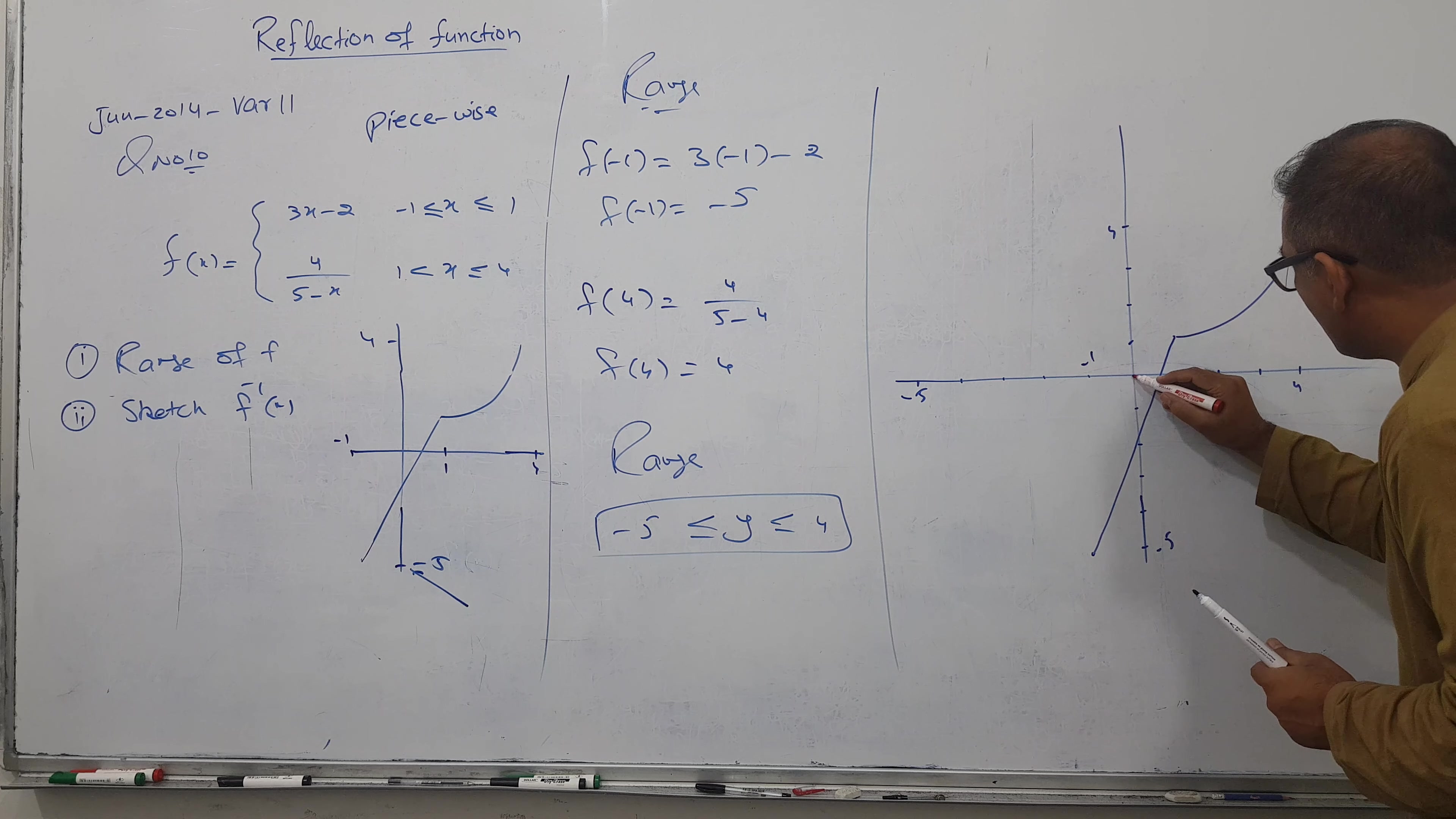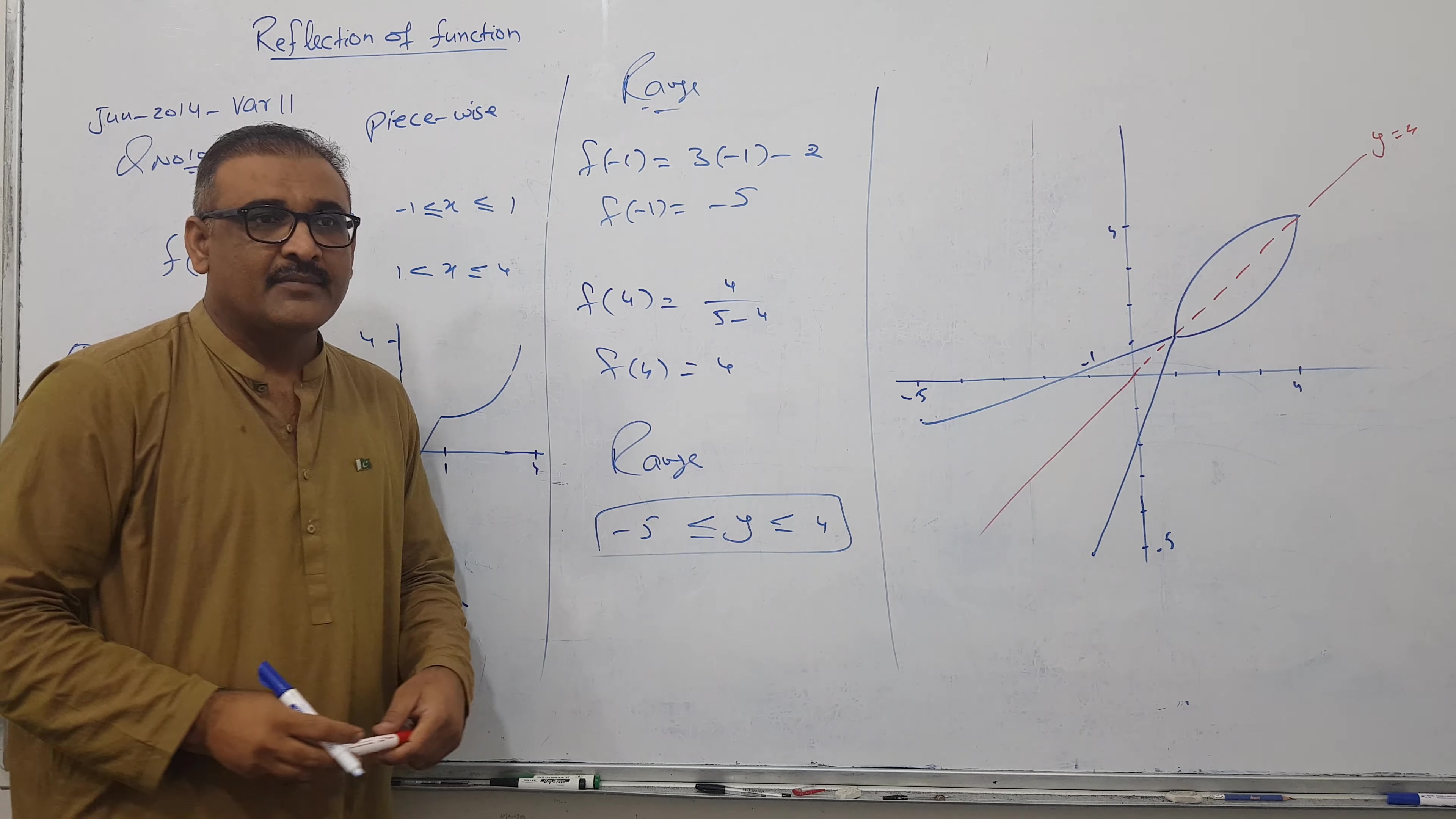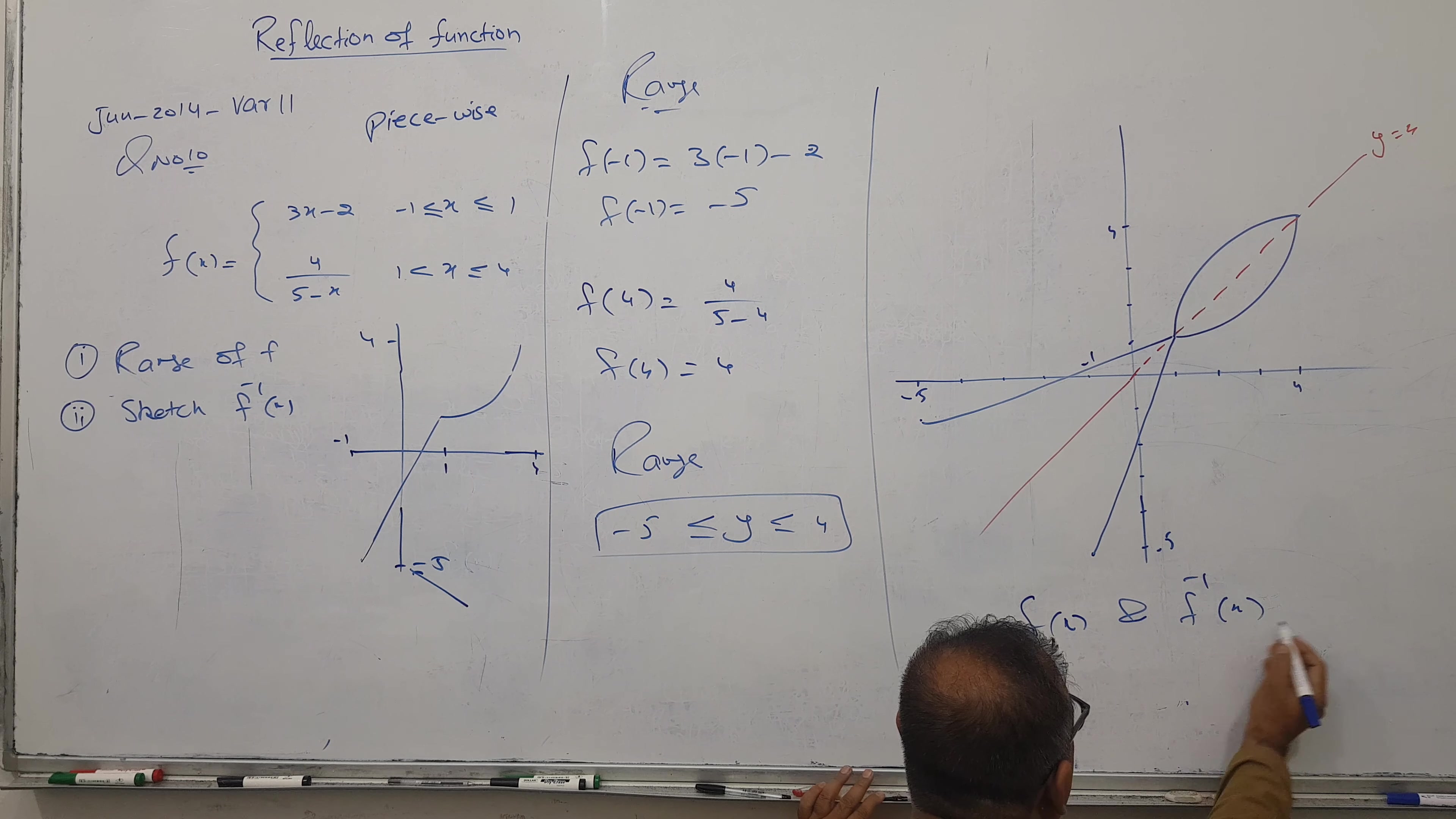First I'll draw a mirror line. This is called y equal to x. Now I'll draw the reflection. Not a hard job. This way reflection and this one. I got my reflection easily. At this point, x is minus one, y is minus five. Flip them: x is minus five, y is minus one. They are reflection of each other. The relation between them is f of x and f inverse of x are reflection in line y equal to x. So simple and clear.